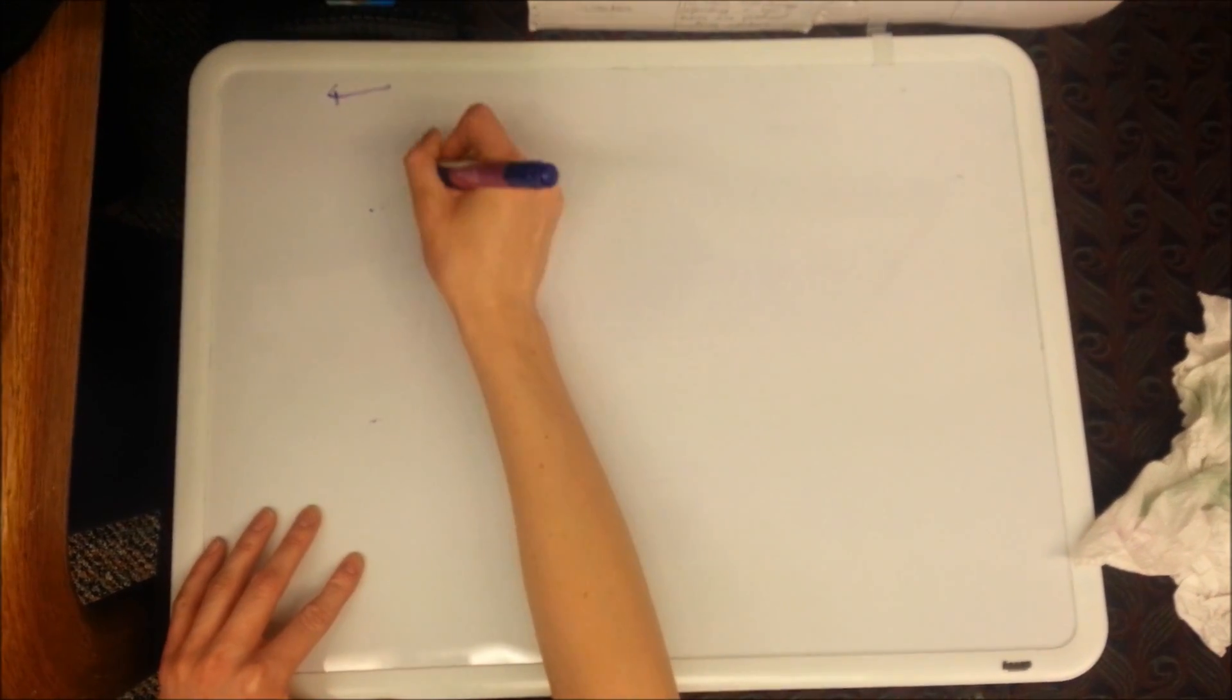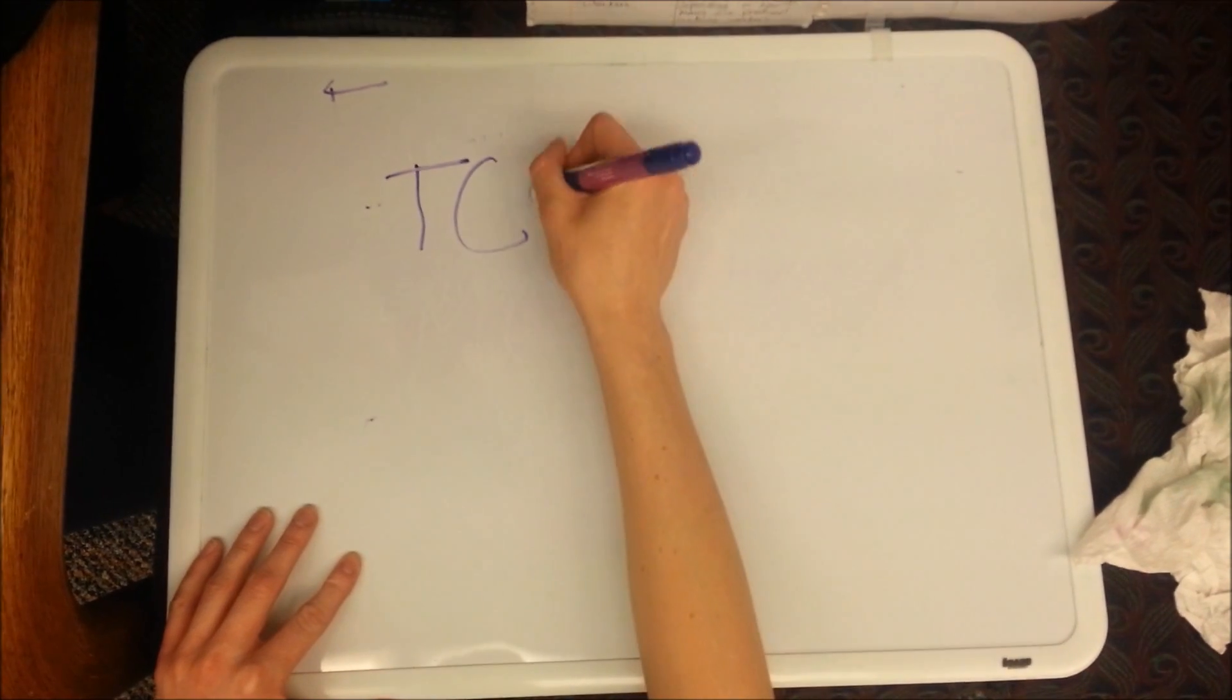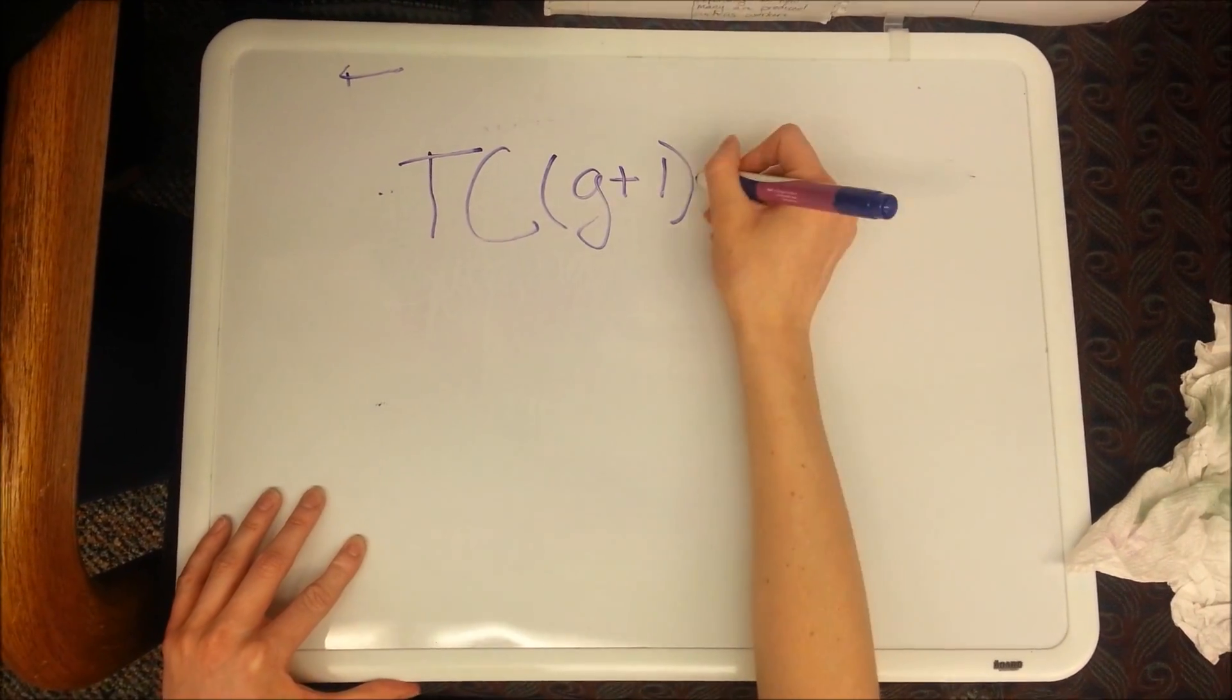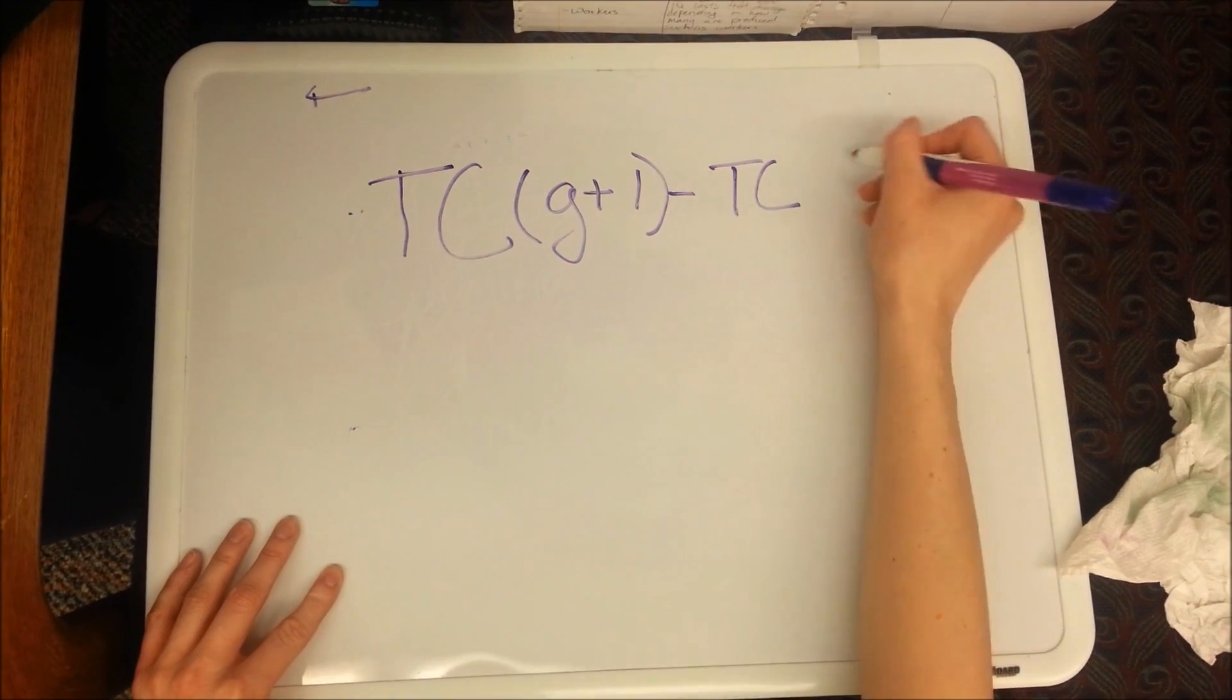By taking the cost of producing the next good and subtracting the cost of producing the current good, we are able to determine the change in total cost.